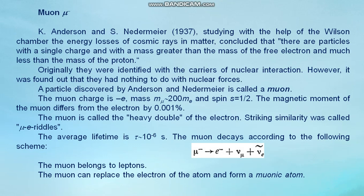The muon charge is minus e. Muon mass Mμ approximately equals 100 electron masses, and spin equals one half. The magnetic moment of the muon differs from the electron by 0.001 percent. The muon is called the heavy double of the electron. Striking similarity was called μ-e riddles. The average lifetime is τ approximately equal to 10⁻⁶ seconds. The muon decays according to the following scheme.